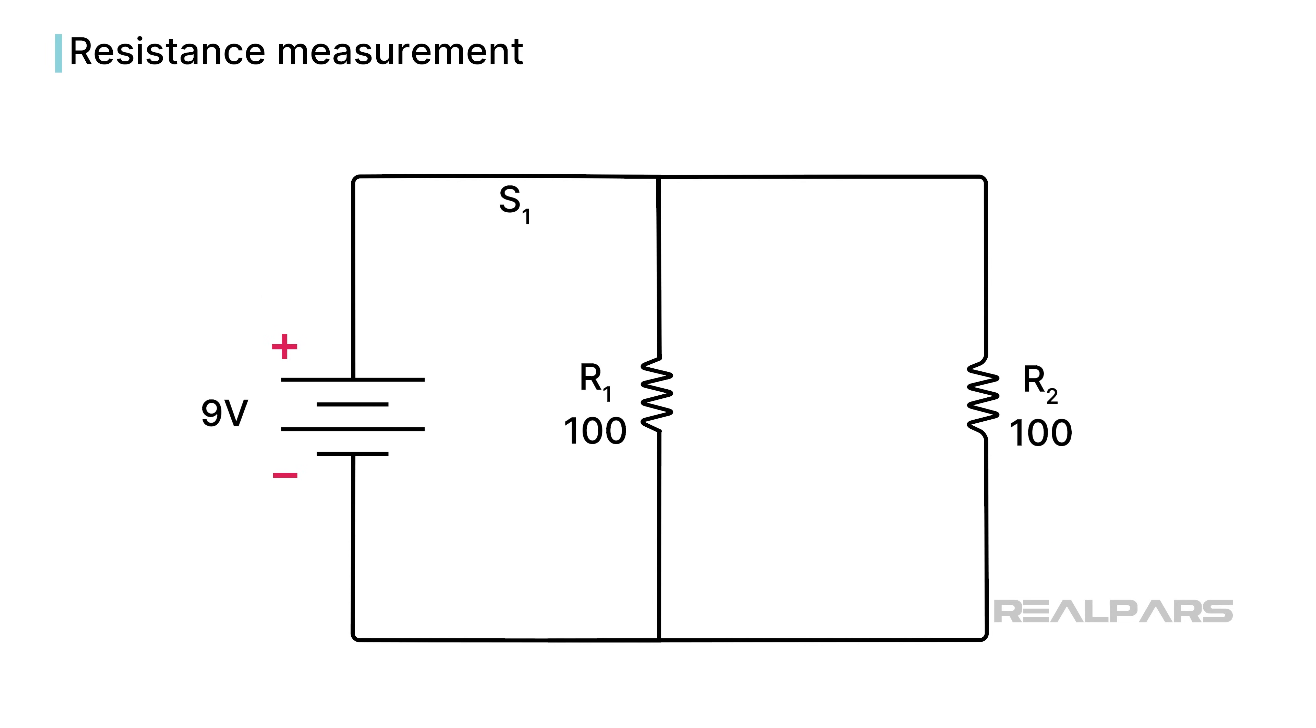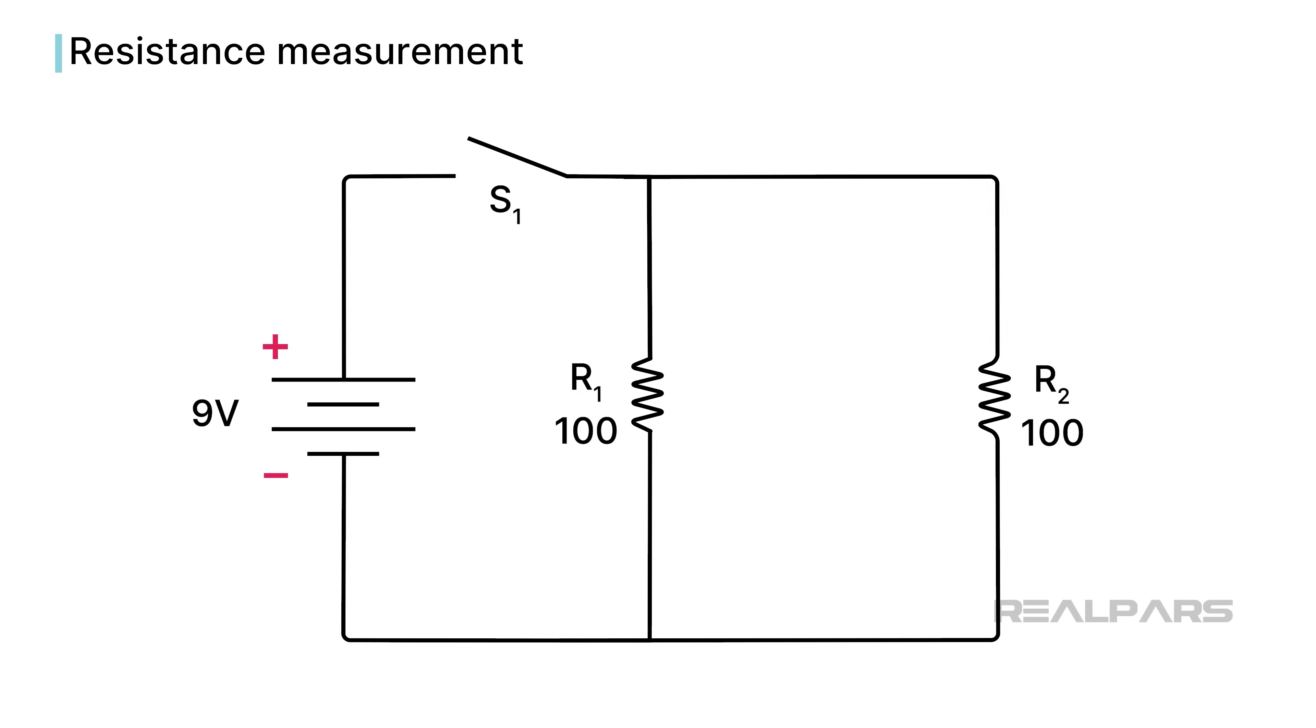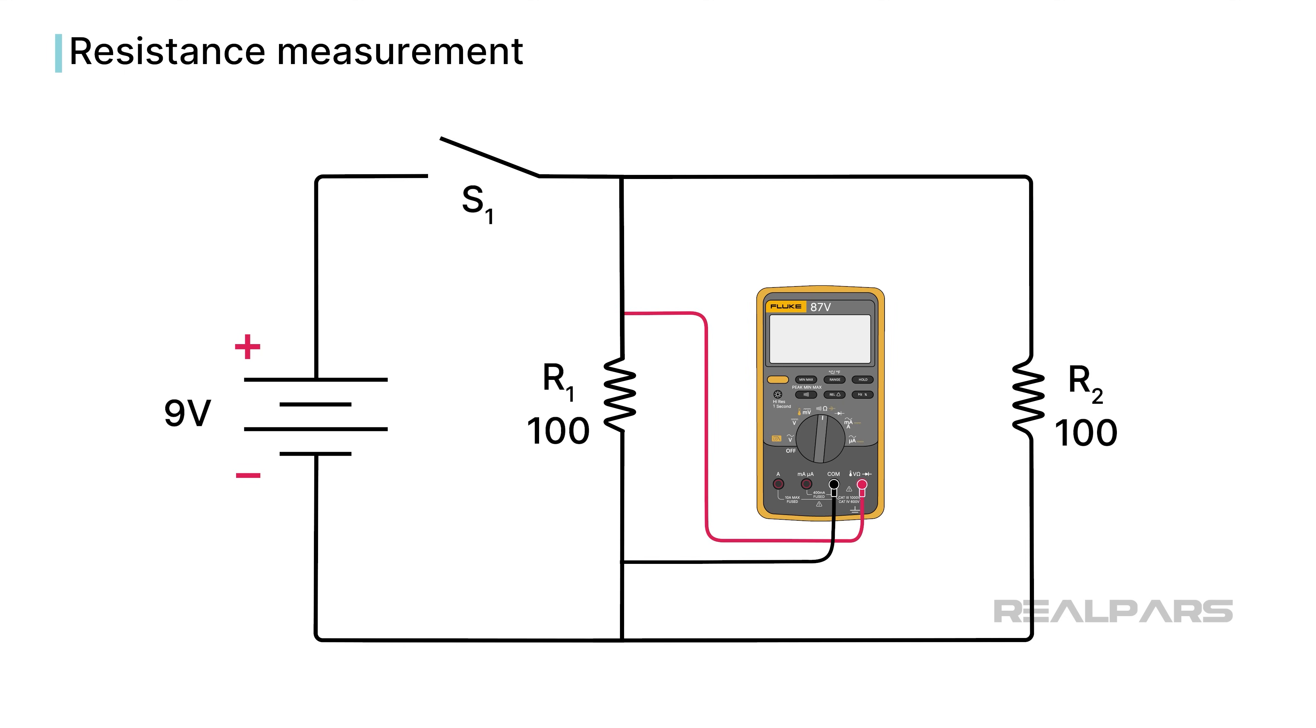Let's look at an example to illustrate. We want to measure the resistance of R1. First, we need to remove power from R1 by opening S1. Okay, now we place our ohmmeter across R1. The meter reads 50 ohms because we have not isolated R1 from R2.